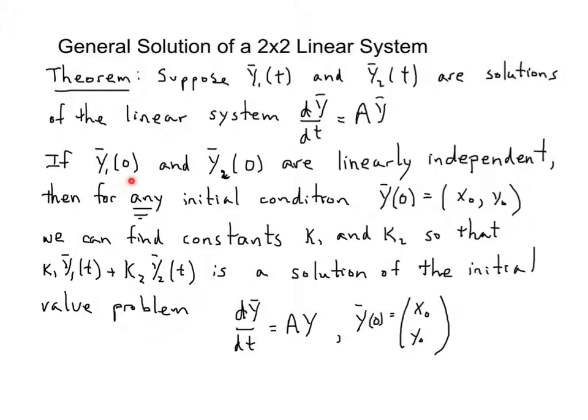If the solutions at time 0, y₁(0) and y₂(0), are linearly independent—that means they're not scalar multiples of each other—then for any possible initial condition, if we're looking for something that passes through the point (x₀, y₀), we can find constants k₁ and k₂ so that this linear combination k₁y₁(t) + k₂y₂(t) is a solution. I've already demonstrated with the linearity principle that any linear combination of two solutions is a solution, so it's guaranteed that this will also solve this system.